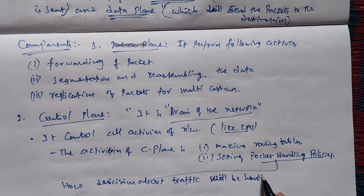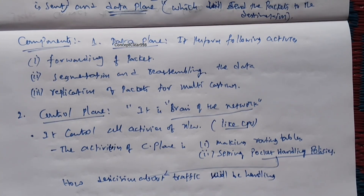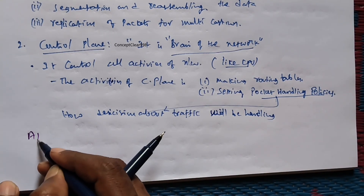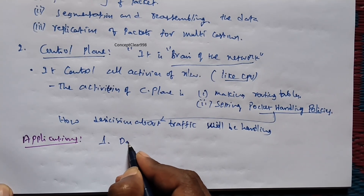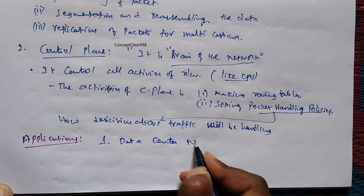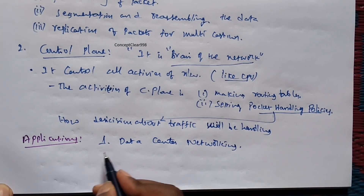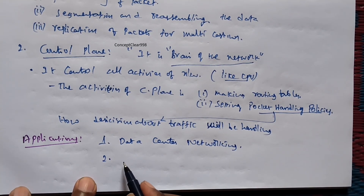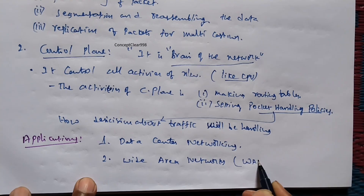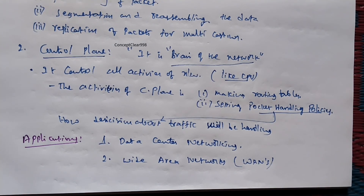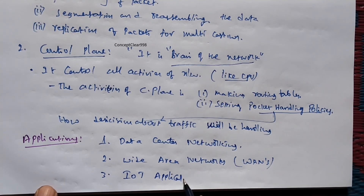The applications of SDN are: first, data center networking, where it works as a data center for all networking devices; second, wide area networks (WAN), which is like the internet and connects all computers and IoT devices over a long range; and third, IoT applications.